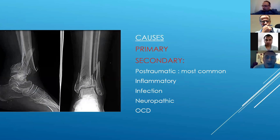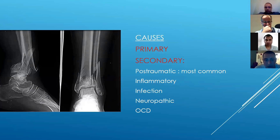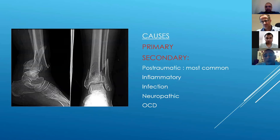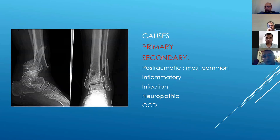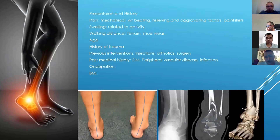Primary ankle arthritis is very uncommon — about 10% incidence. It's quite rare to find a normal ankle that develops arthritis without any prior injury or problem. Usually there's a cause, hence it's secondary. The most common cause is post-traumatic — post-fractures or recurrent ankle instability over the years. Other secondary causes include inflammatory arthritis such as rheumatoid, crystalline arthropathy such as gout, septic arthritis causing ankle arthritis, neuropathic joints such as Charcot joints, and osteochondritis dissecans.